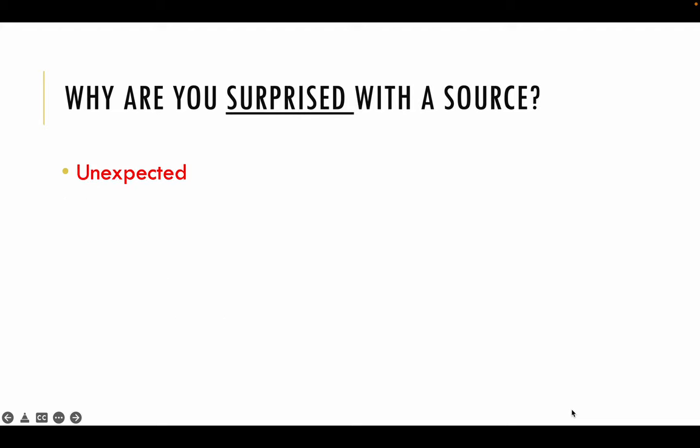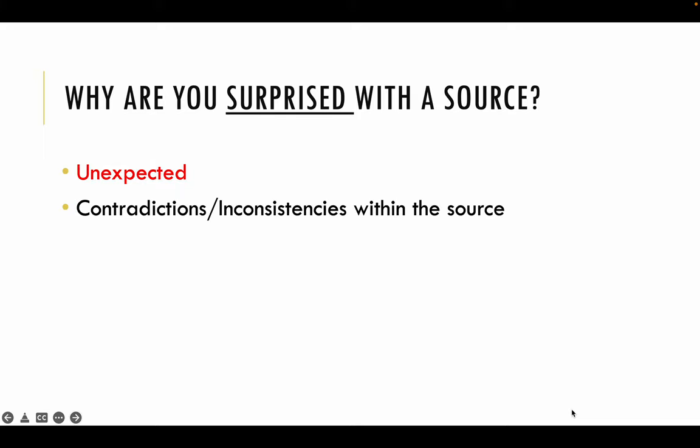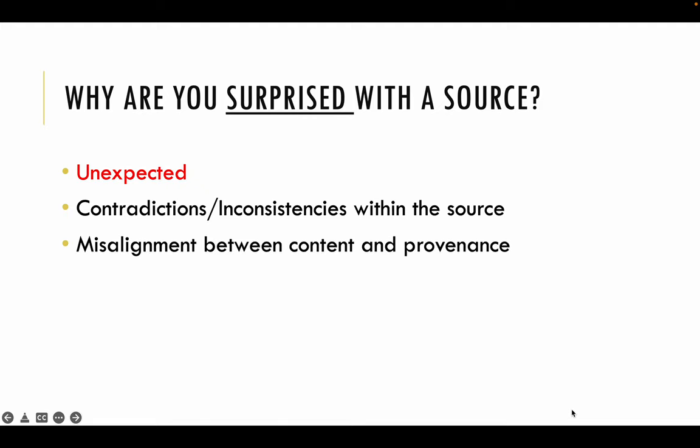Why are you then surprised with a source? It's because it's unexpected. When reading through the source, we realise that the content has a lot of contradictions and inconsistencies. So because there are inconsistencies or gaps in information in the source, we will say that we did not expect it — it is unexpected to us. Or, we see a misalignment between content and provenance, because when we see the identity of the source-giver, we did not expect the person to say a certain thing in the content.